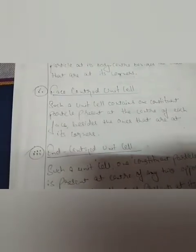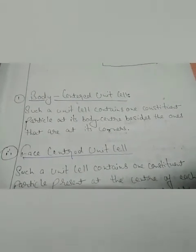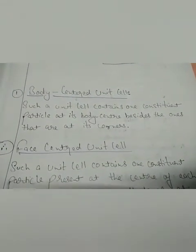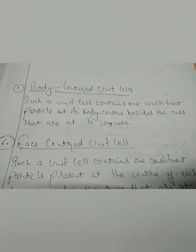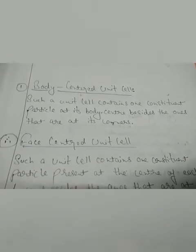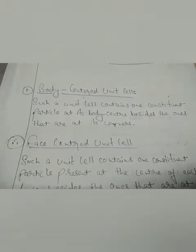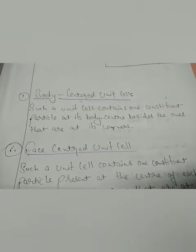The centered unit cell is divided into three types: body-centered unit cell, face-centered unit cell, and end-centered unit cell. A body-centered unit cell is one which contains one constituent particle at its body center, in addition to the ones at its corners.